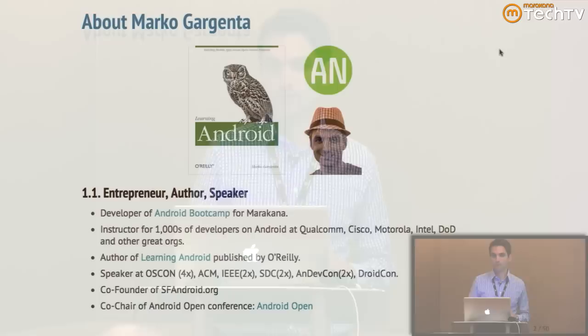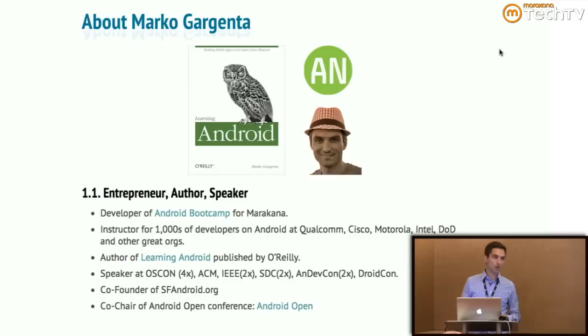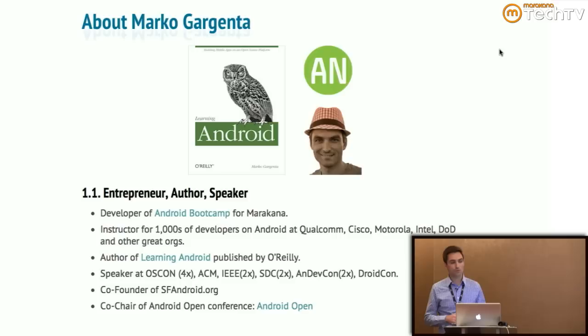Before we get started, a little bit about myself. My name is Marko, my background is in Java — I've been a Java developer for a very long time, since it was a little project at Sun called Oak. Once Android came out I got really interested and started poking around, and out of that developed an Android boot camp — a five-day course taking people who know Java all the way to developing just about any application in Android. I bottled that course into a book called Learning Android, published by O'Reilly, since translated into Chinese, German, and Croatian — one of the top ten best-selling Android books. I also run the San Francisco Android Users Group and frequently speak at conferences.